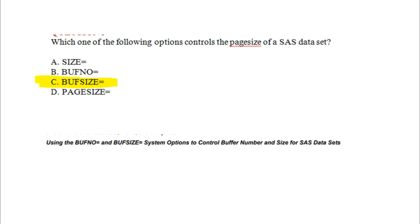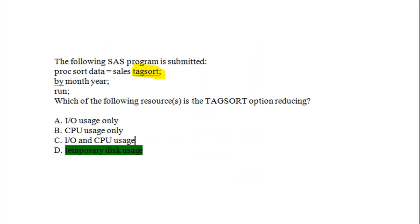The seventh question: which option controls the page size of a SAS dataset? The BUFSIZE system option is used to control the SAS dataset buffer — BUFSIZE is a system option to control the buffer number and size of SAS datasets.